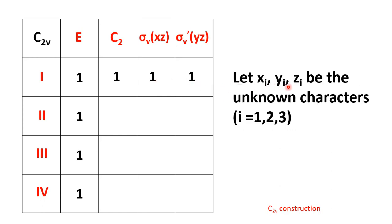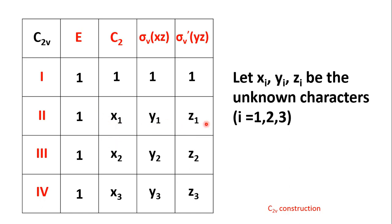Next, let Xi, Yi, Zi (where i = 1, 2, 3) be the unknown characters. With the remaining nine boxes, we place the terms X1, Y1, Z1 in the second row; X2, Y2, Z2 in the third row; and X3, Y3, Z3 in the fourth row. We need to find the values of all these variables X1, Y1, Z1, X2, Y2, Z2, and X3, Y3, Z3.